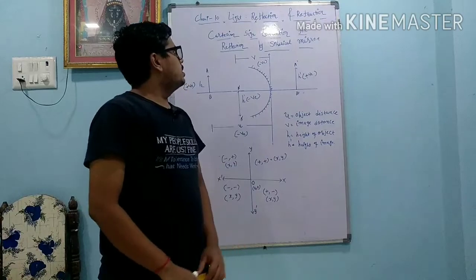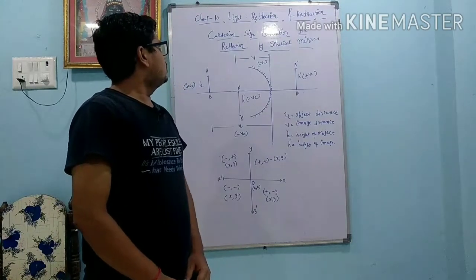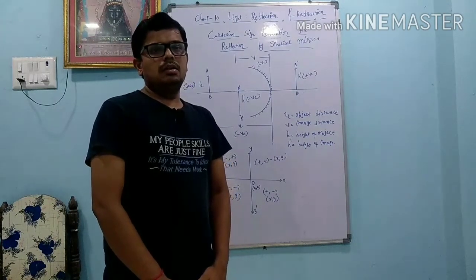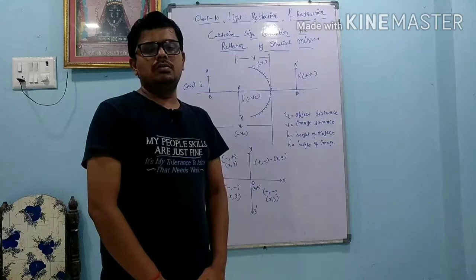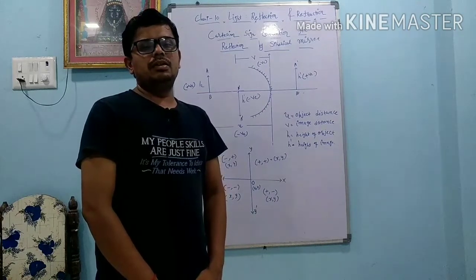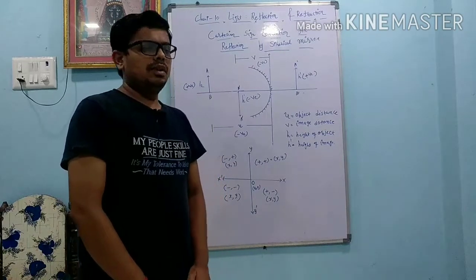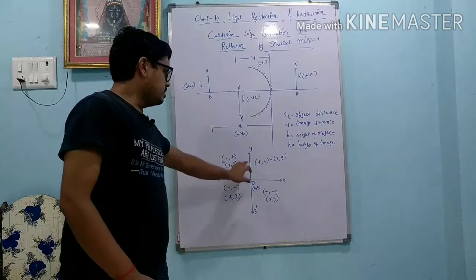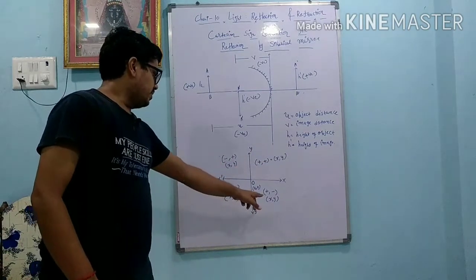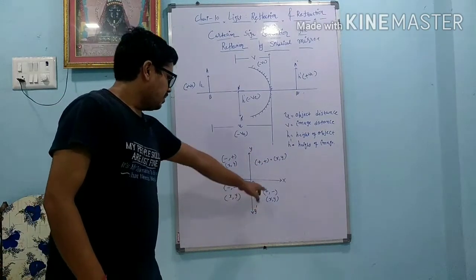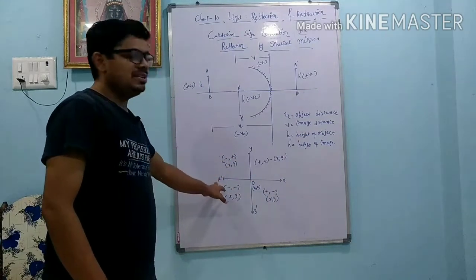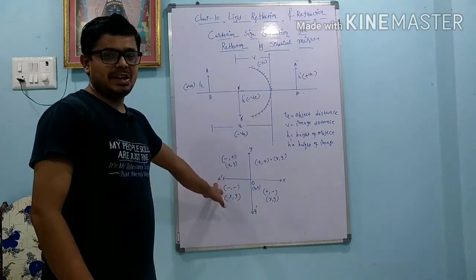We will learn the Cartesian sign convention for reflection by spherical mirrors. Now you may think - what is the Cartesian system? For that, first we will understand one graph. In the graph, four quadrants are there. The X axis is positive on one side and negative on the other side.